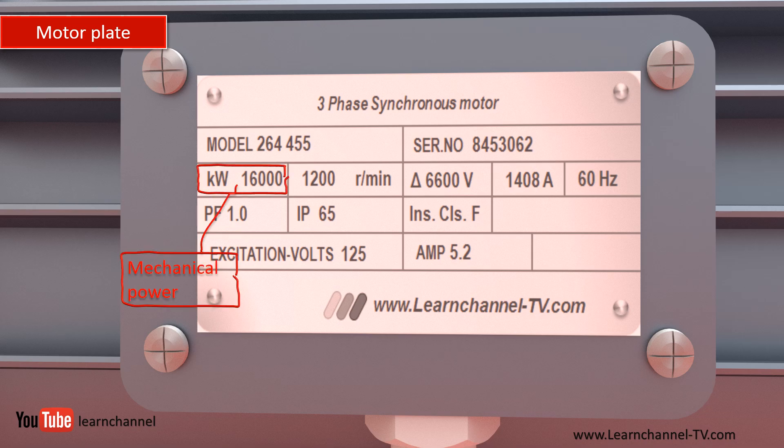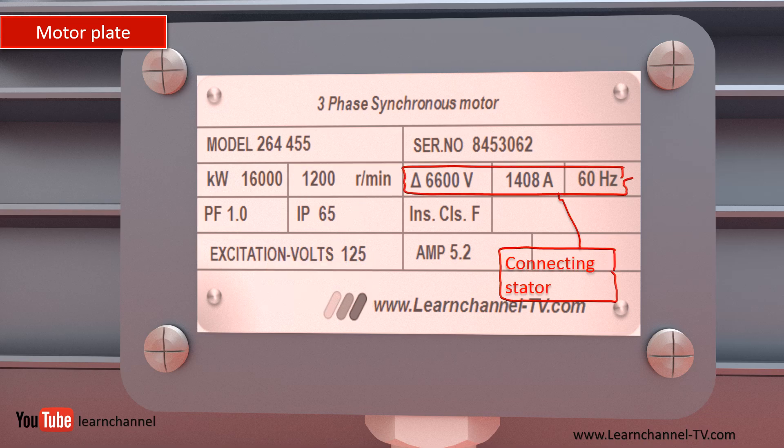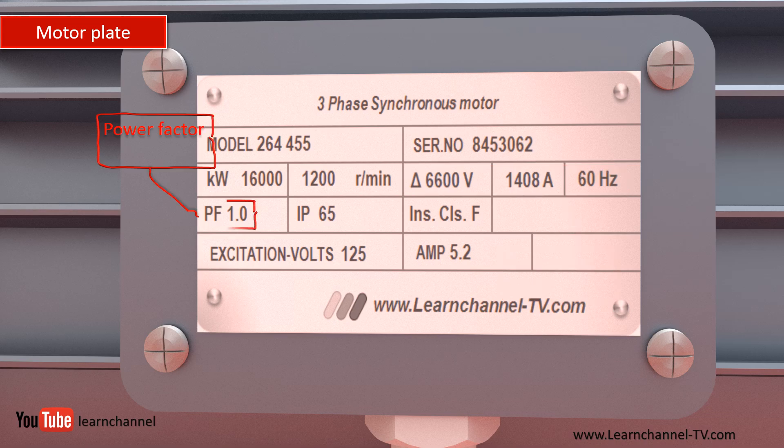The motor's rated mechanical output power is given in kilowatts. The motor's rated speed, or full load RPM, refers to full load. This electrical data is important for the stator windings. Here, you can connect the motor in delta. Note that the power factor at rated operation is 1.